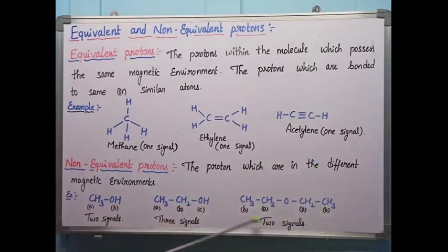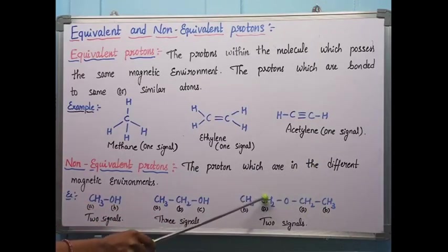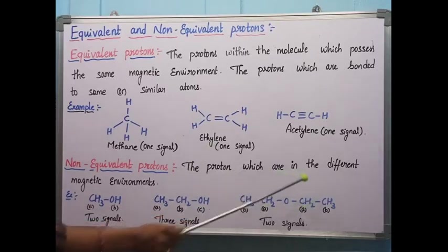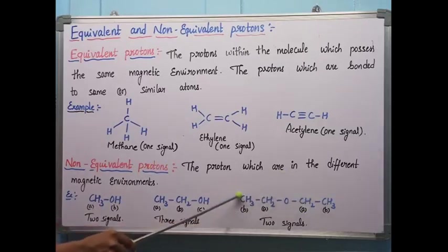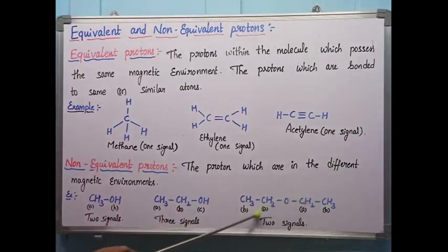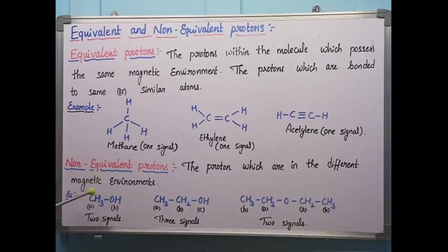In diethyl ether, the two CH2 groups are at the same distance from the oxygen and in equal environments, so they give one signal (Signal A). The two CH3 groups are also at equal distance from the oxygen and give a separate signal (Signal B). So two signals are observed for diethyl ether. In summary, equivalent protons are in the same magnetic environment, while non-equivalent protons are in different magnetic environments.